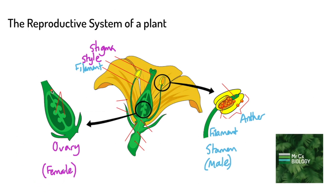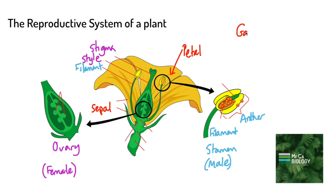Some other parts we might recognise of a flower include the petal and this little green thing underneath, that's called the sepal.